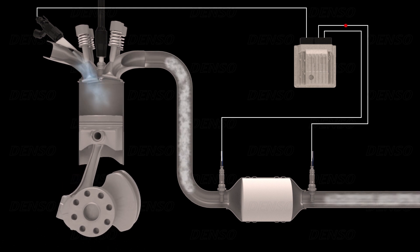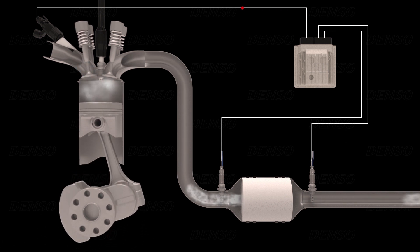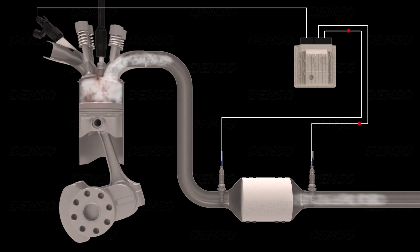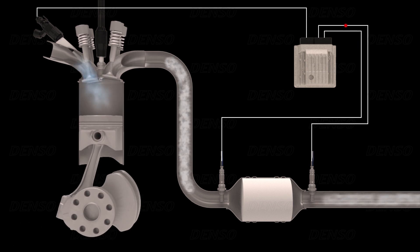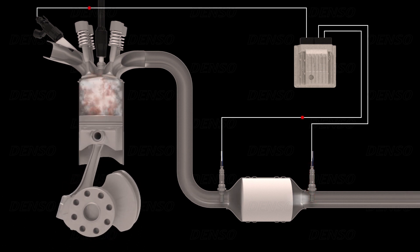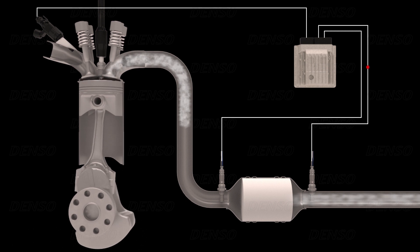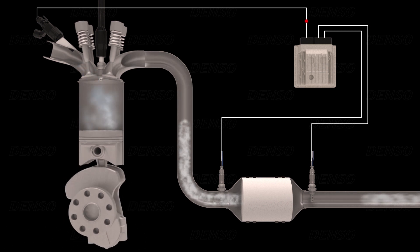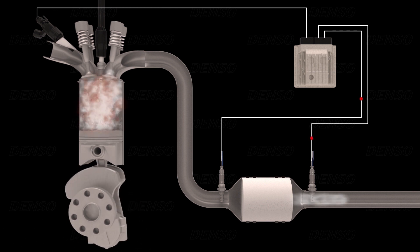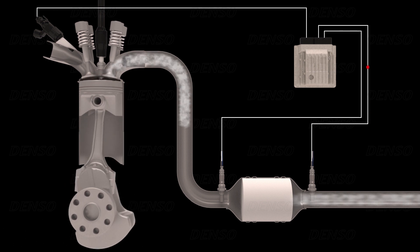But to monitor the efficiency of the catalyst and its chemical reactions, a second or diagnostic lambda sensor is used. The diagnostic sensor is located downstream of the catalytic converter, and because 100% of the oxygen has been used for catalytic reactions, the oxygen content is low, and the signal voltage produced by the diagnostic sensor should always be high.